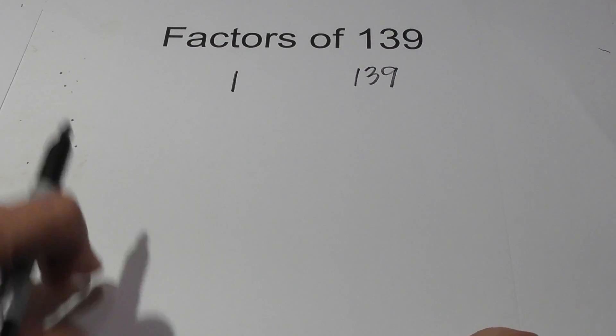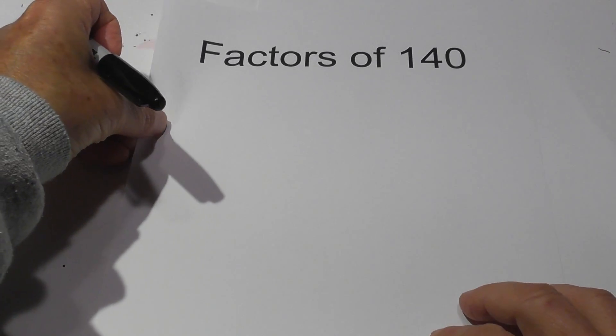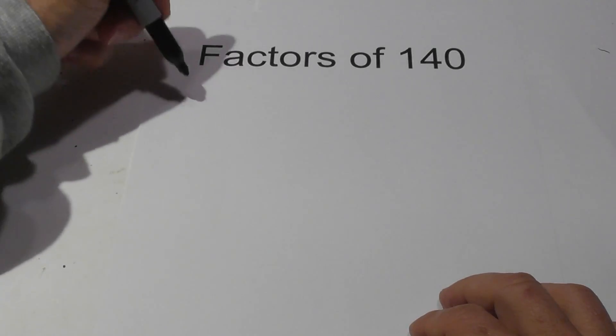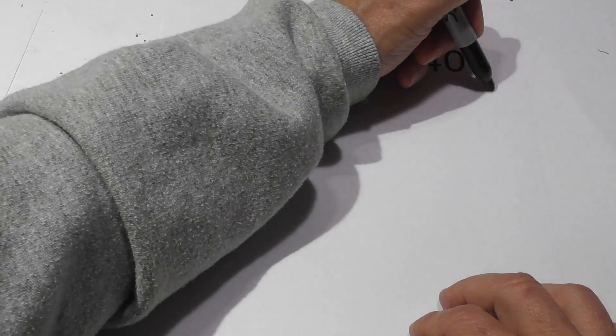Now 140 is a completely different animal, so let's go ahead and pull 140 out. The factors of 140 are as follows. There's quite a bit of them. Let's begin with 1 and 140.